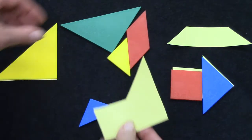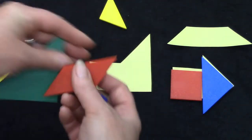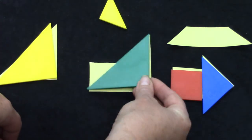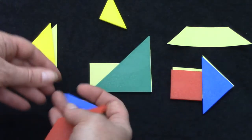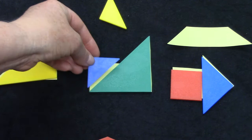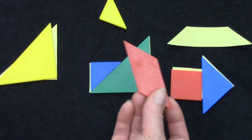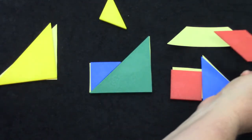I have one more shape here. Let's see. Oh that fits. I have one there and then I have two more pieces to cover this shape.